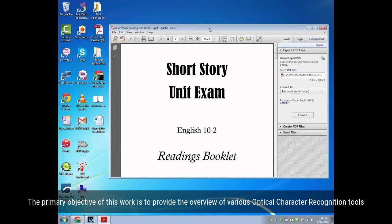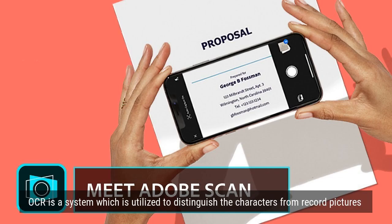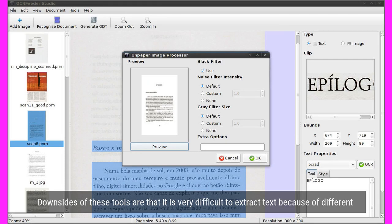The primary objective of this work is to provide an overview of various optical character recognition tools and analyze their performance by applying two factors: OCR tool performance accuracy and error rate. OCR is a system utilized to distinguish characters from document images. Scanned images can easily extract text with the help of different OCR tools.